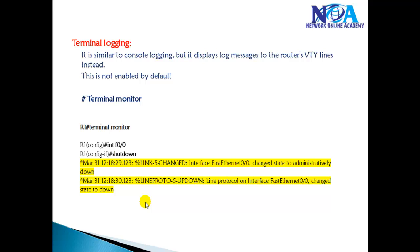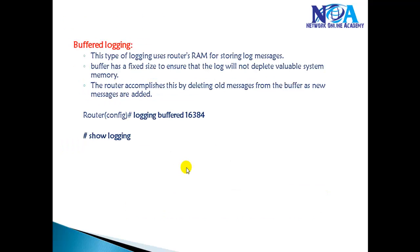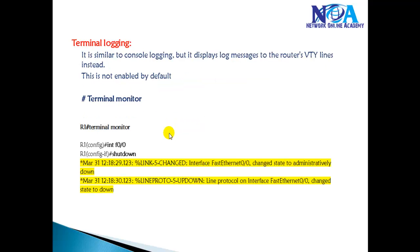To summarize: messages seen on the console screen are console logging; messages stored in local RAM are buffer logging, and the size can be changed with the 'logging buffered' command. When accessing via Telnet, log messages are not sent to the VTY lines by default — you must use 'terminal monitor' to enable this. In production networks where devices are accessed remotely, this is useful for seeing real-time messages like EIGRP neighbor adjacencies being established.